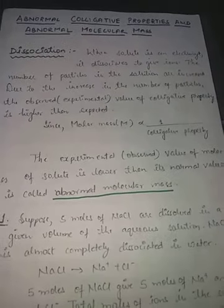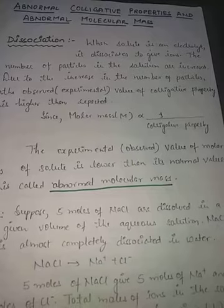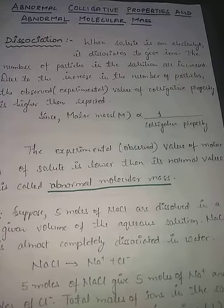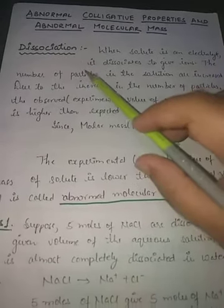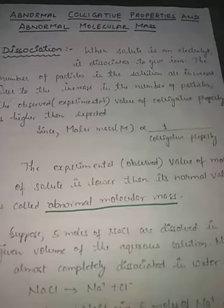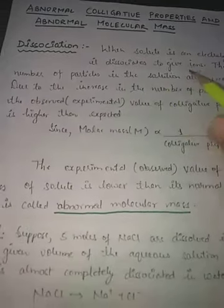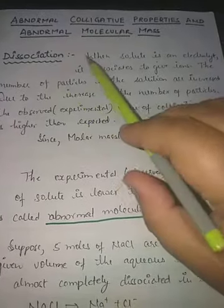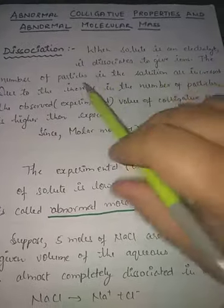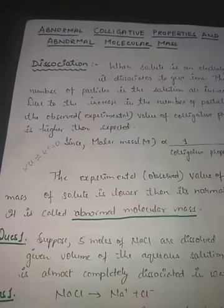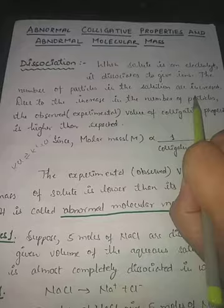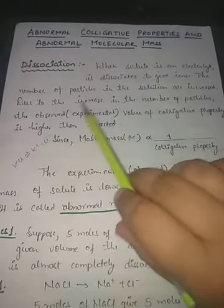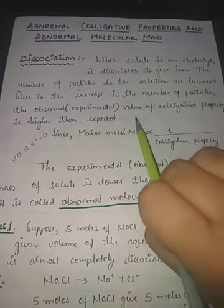Hello students, we have studied about all the colligative properties. Here we'll study: if there is any substance which gets dissociated or associated during the formation of the solution, then how to calculate the different colligative properties. If a substance is dissociated — when the solute is an electrolyte and it dissociates to give ions — the number of particles in the solution will increase. Like suppose KCl is there and it will dissociate to give K⁺ and Cl⁻ ions, meaning the number of particles in the solution are increased. Due to the increase in the number of particles, the observed value of the colligative property is higher than expected.